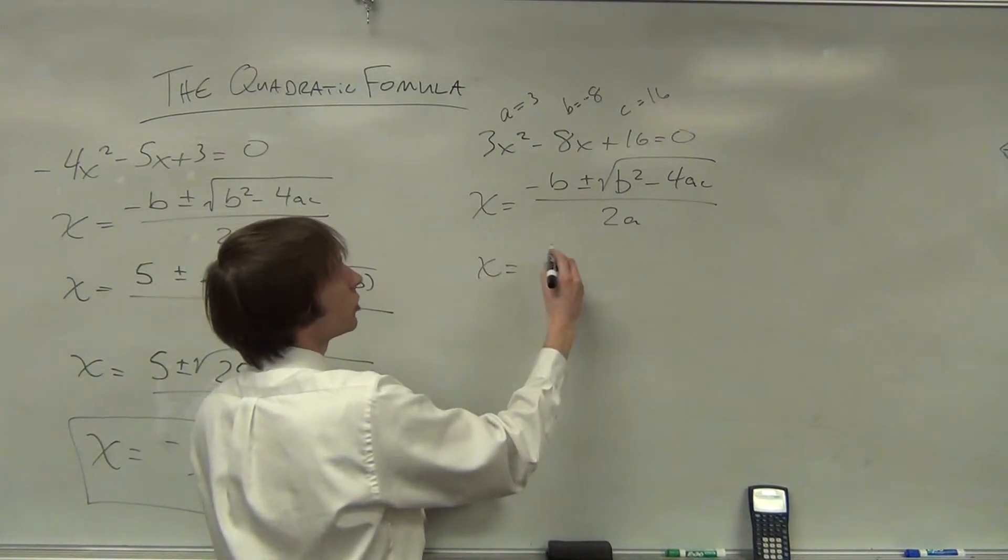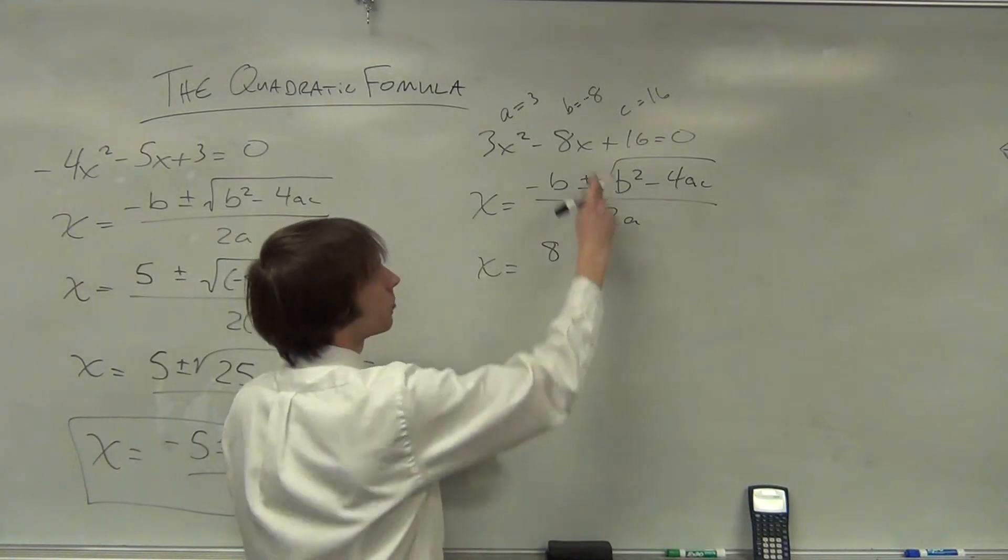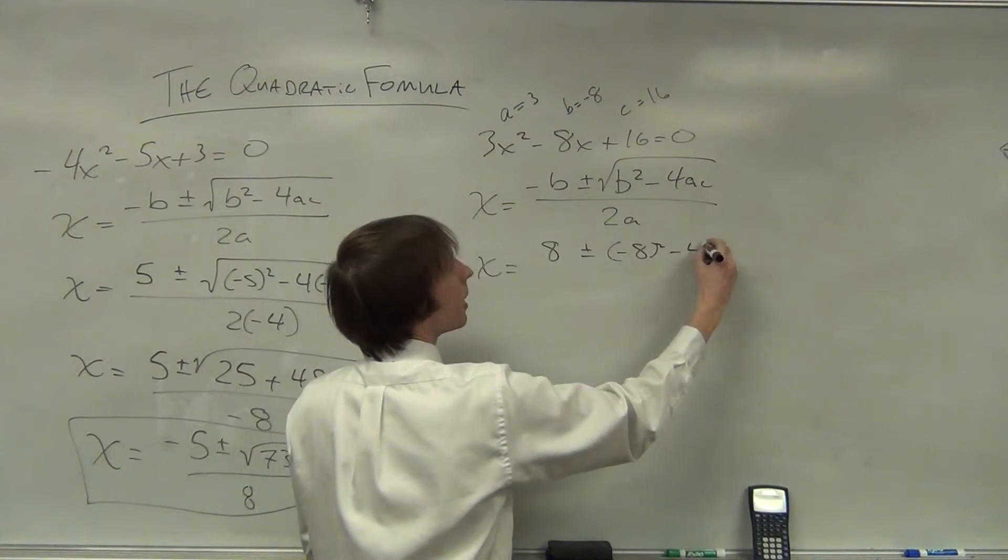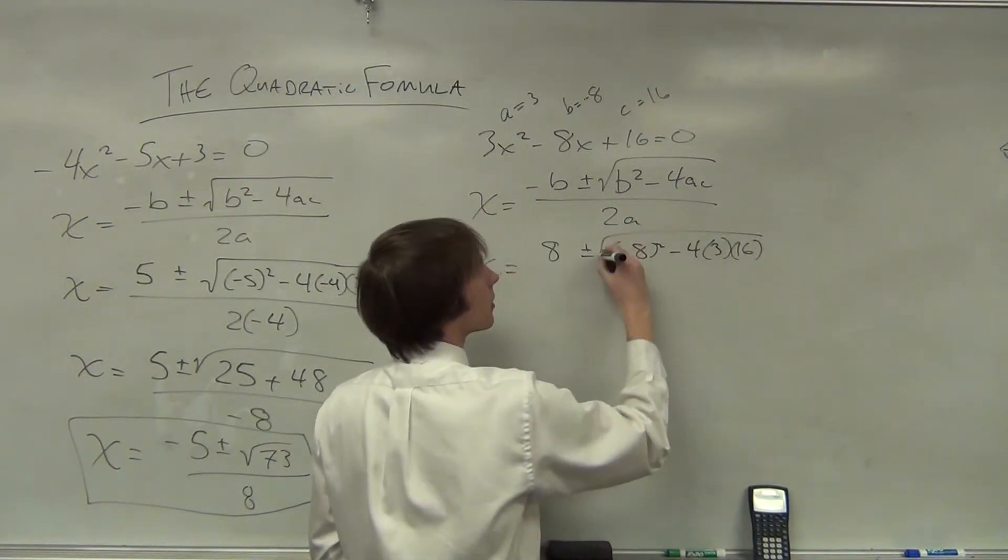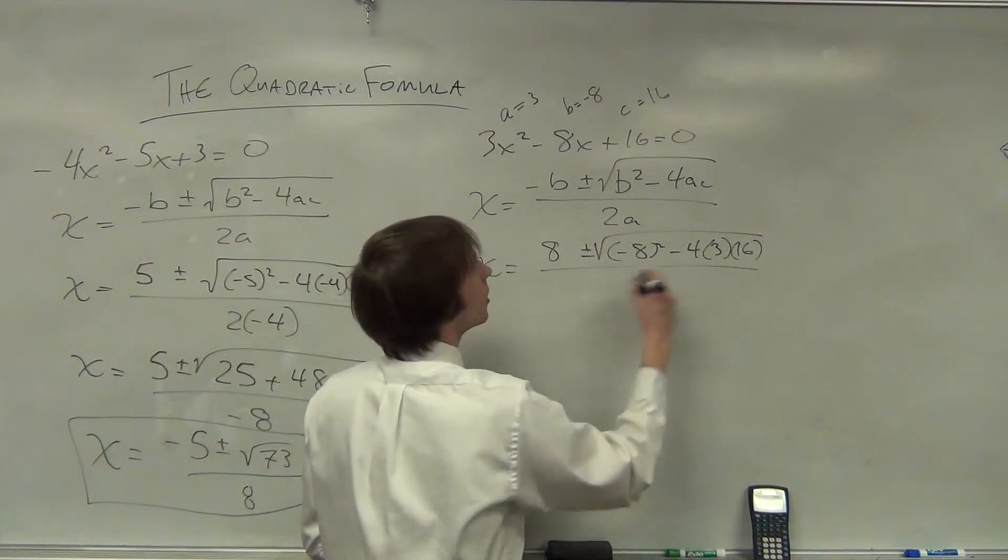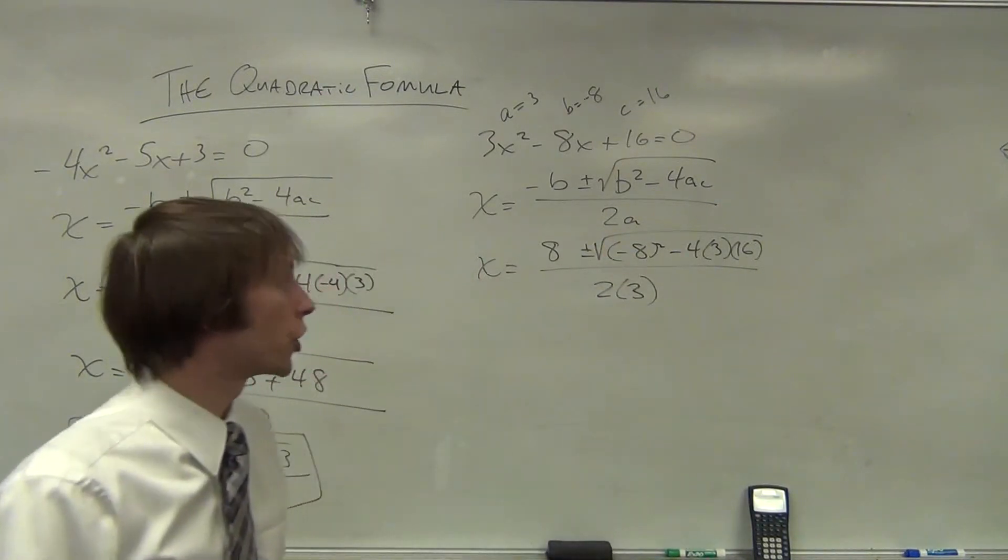So in this case, x is equal to the opposite of -8, so positive 8, plus or minus -8 squared minus 4 times 3 times 16. I might need my calculator for that. 2 times a is our denominator, 2 times 3 in this case.